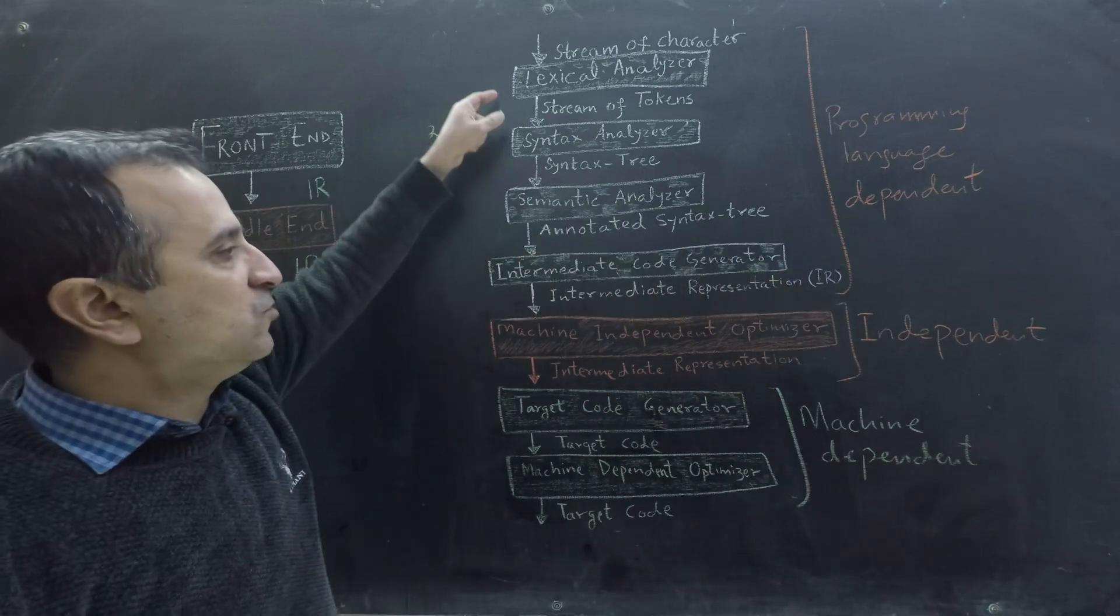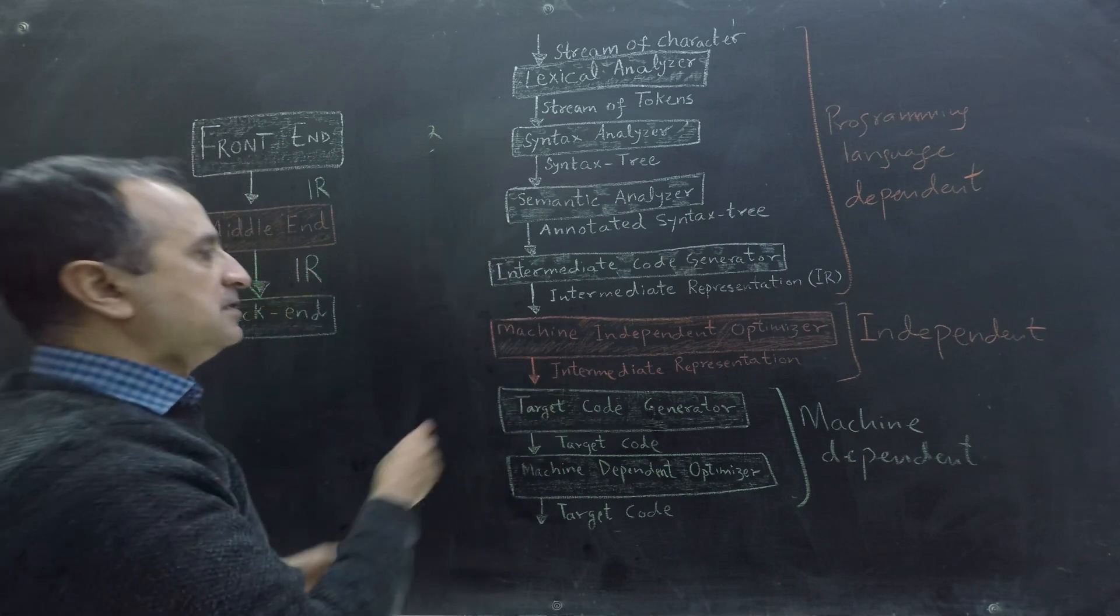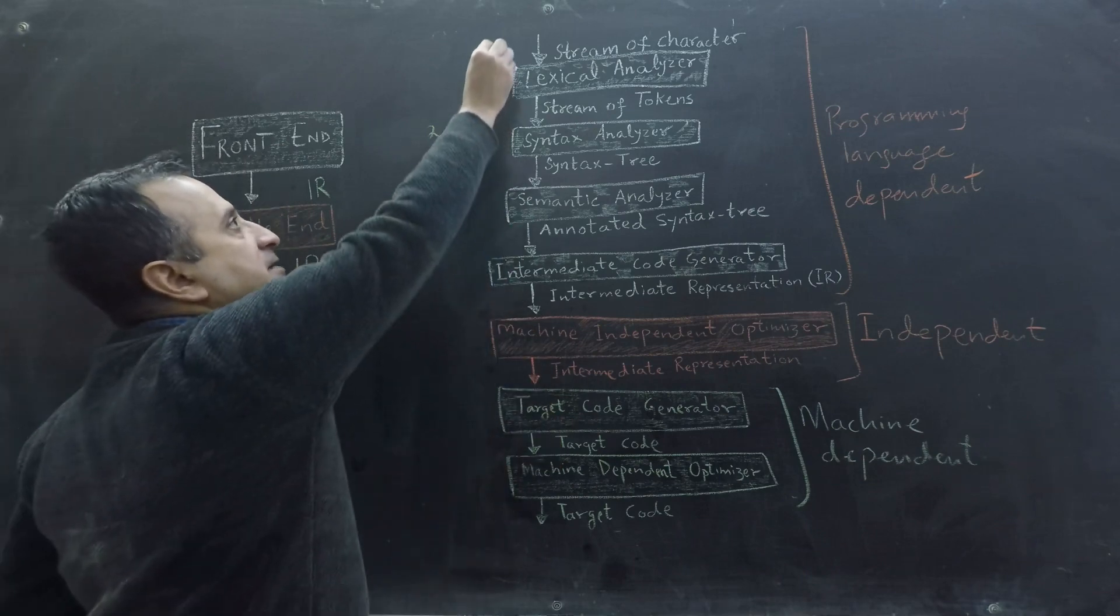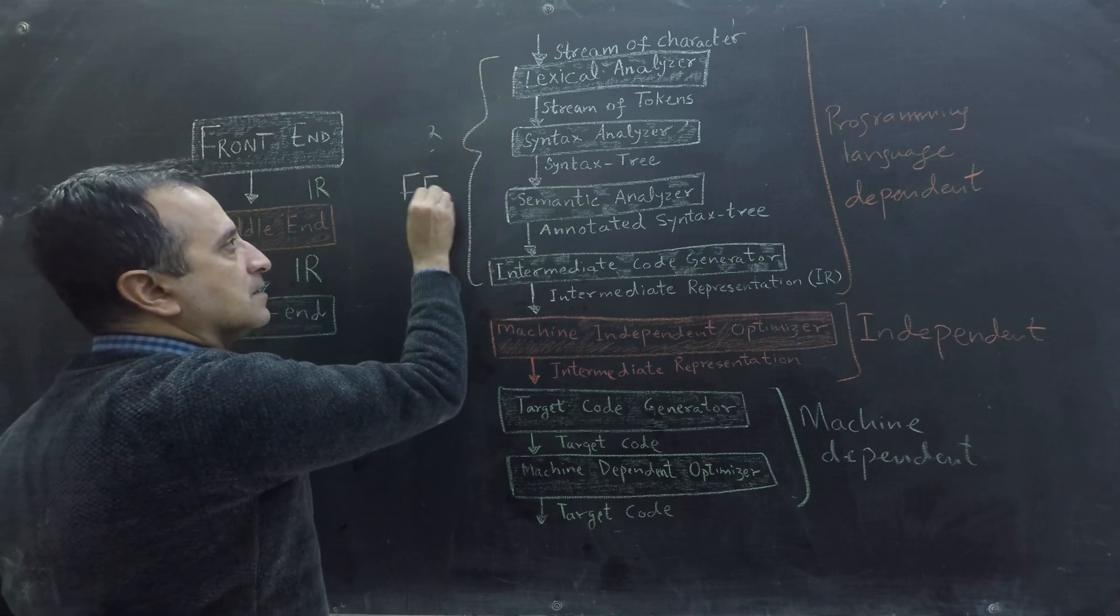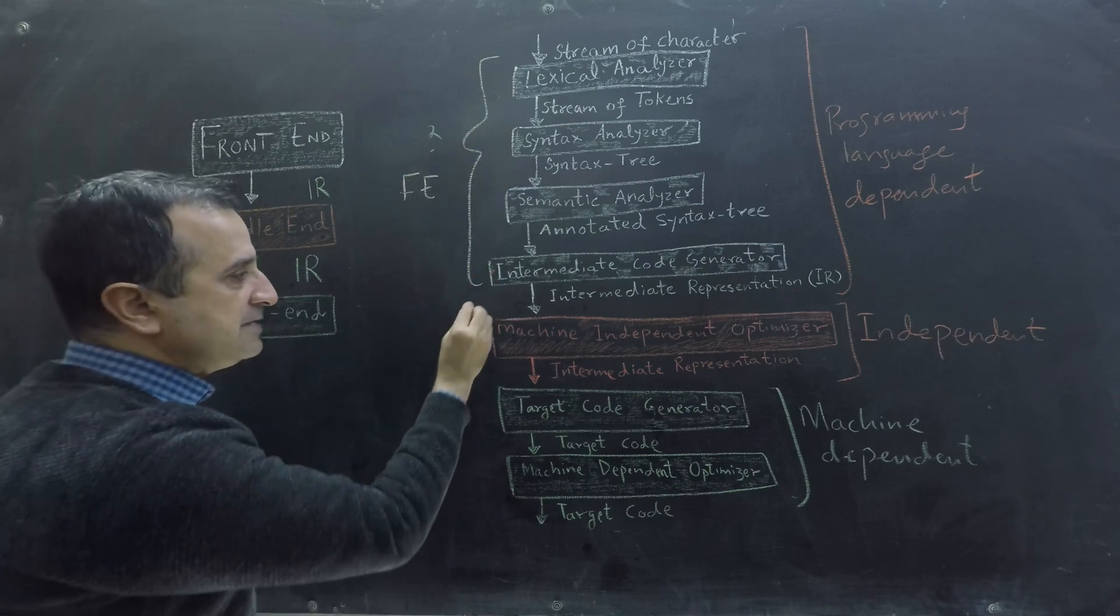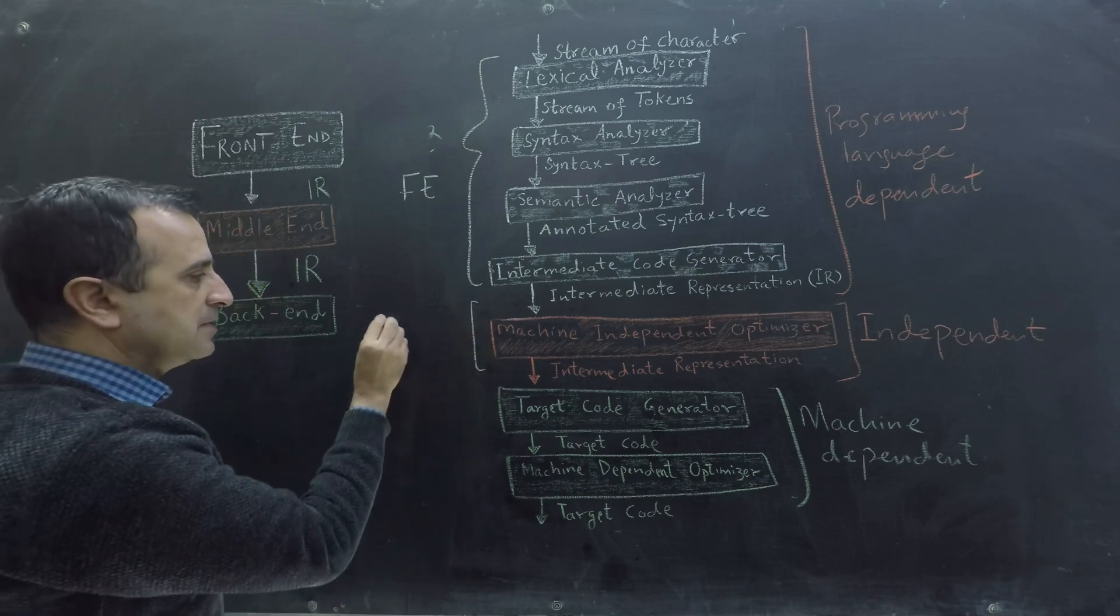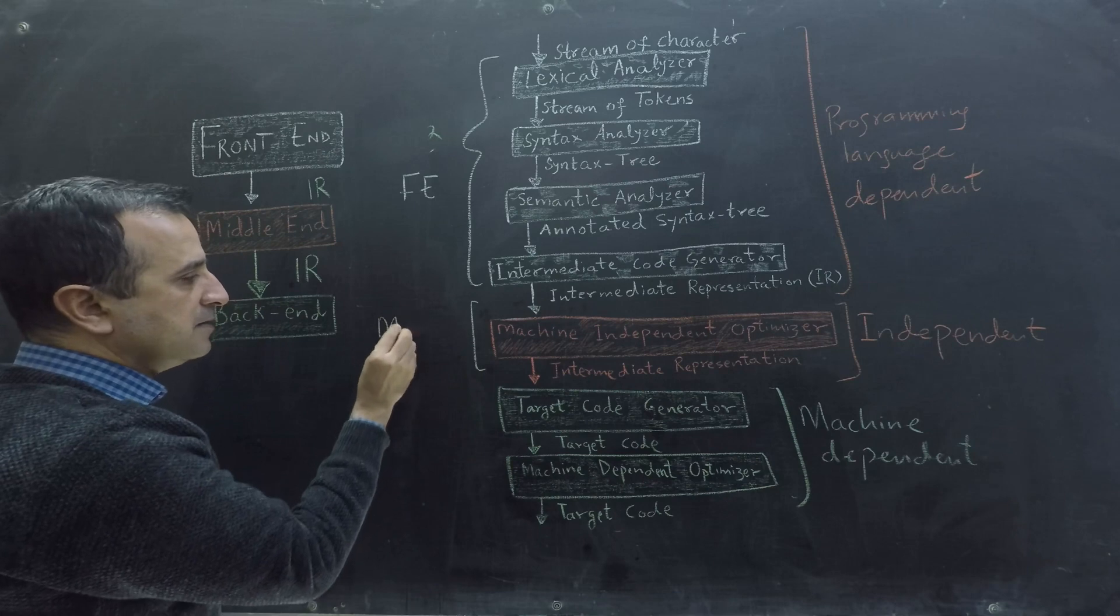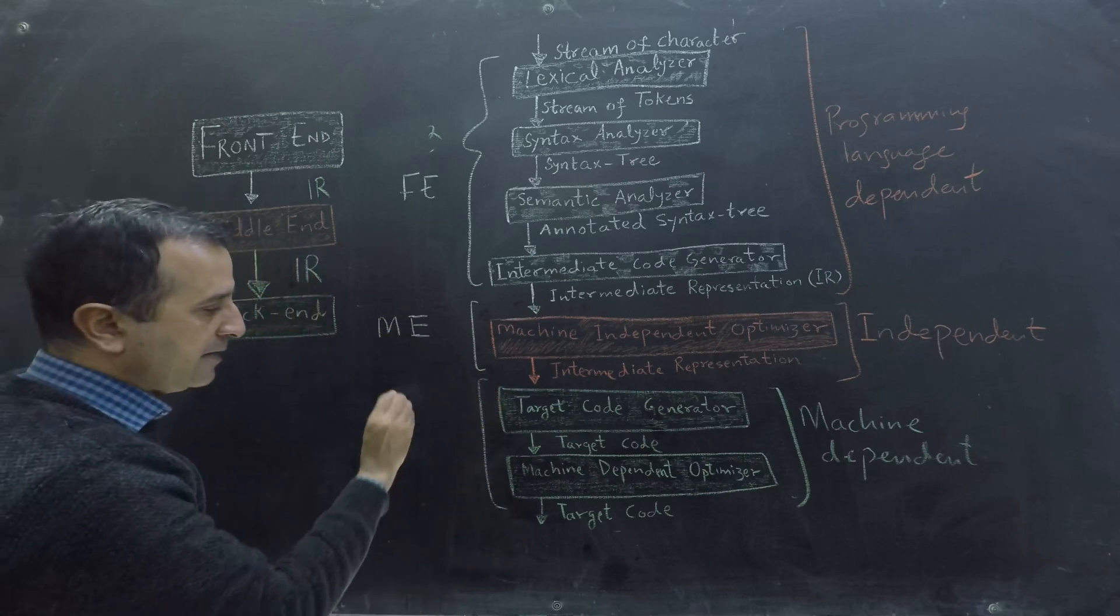We call all of those phases combined as our front end. So this is my front end. And we call this phase as our middle end. This is my middle end and these two phases make the back end.